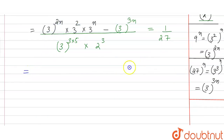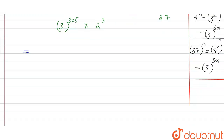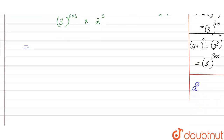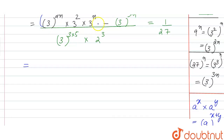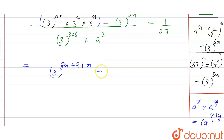We have the property that a raised to power x into a raised to power y — because the bases are the same, in multiplication the powers are added. So we combine the numerator terms: 3 raised to power 2n plus 2 plus n, minus 3 raised to power 3n, which simplifies to 3 raised to power 3n plus 2, minus 3 raised to power 3n.